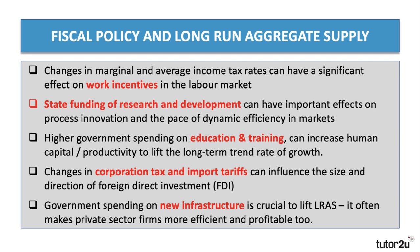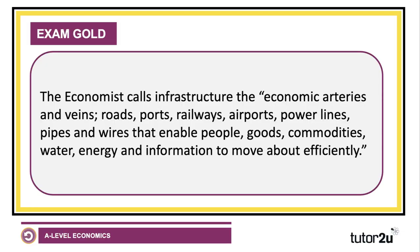Perhaps the most important point is that publicly funded government spending on new infrastructure is massively important to lift long-run aggregate supply — not only because it creates extra productive capacity in the economy, but it also makes private sector firms more efficient and profitable, and can affect their short-run costs. The Economist calls infrastructure the 'economic arteries and veins' — transport, ports, railways, airports, power lines, pipes and wires that enable people, goods, commodities, water, energy, and information to move about efficiently. If a country invests in better quality infrastructure, that allows an economy to become more efficient, lifting productivity and raising the long-term growth rate and per capita incomes.